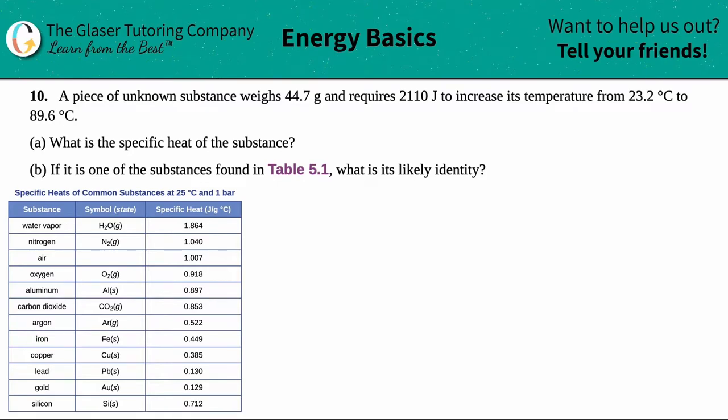Number 10: A piece of unknown substance weighs 44.7 grams and requires 2110 joules to increase its temperature from 23.2 degrees Celsius to 89.6 degrees Celsius. Letter a asks what is the specific heat of the substance? Okay, so with word problems let's just list everything that they gave us. I'm just going to read it over again and write down all the units they told us as I go along.